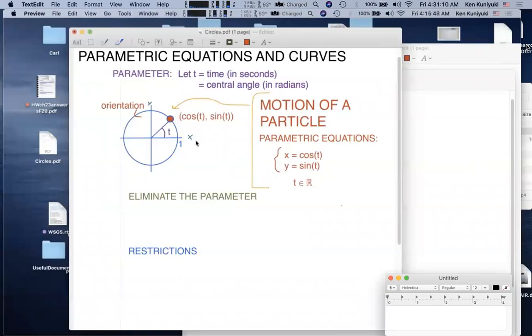So think of t as a time parameter. As time progresses, this particle revolves counterclockwise around this unit circle, and we must indicate the orientation, that is the direction of this particle along the circle, by an arrowhead, like so.